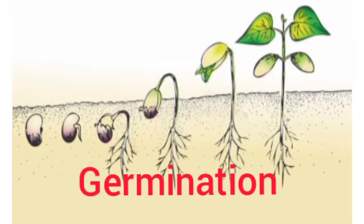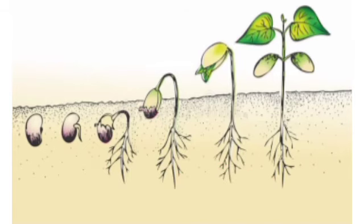Then germination. What is the meaning of germination? The process by which a new plant starts growing from a seed. A baby plant needs air, water, light and soil to grow into a big and healthy plant.